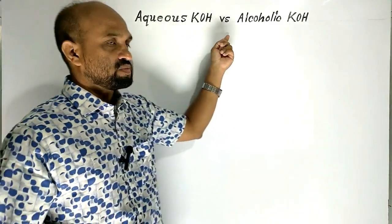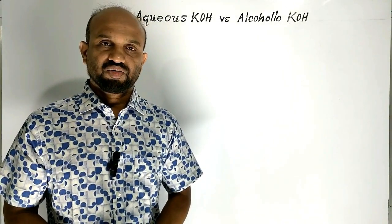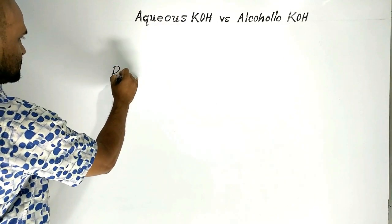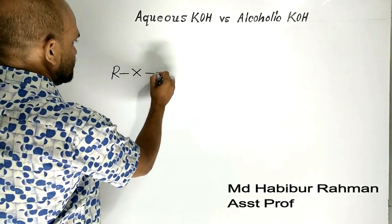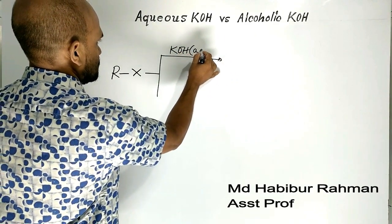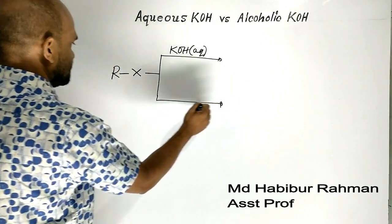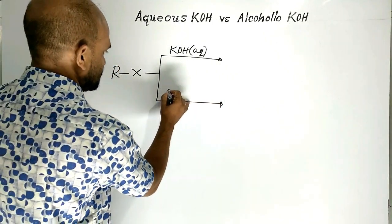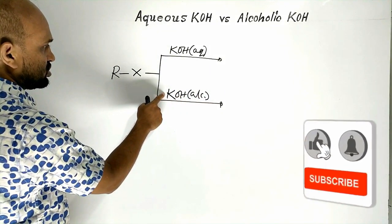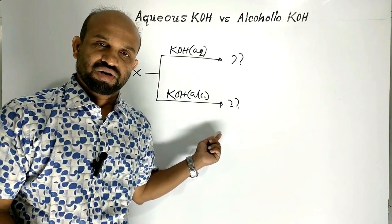Aqueous potassium hydroxide versus alcoholic potassium hydroxide — this is today's lesson. We are going to learn the reaction of alkyl halide with aqueous solution of potassium hydroxide, and the reaction of alkyl halide with alcoholic solution of potassium hydroxide.